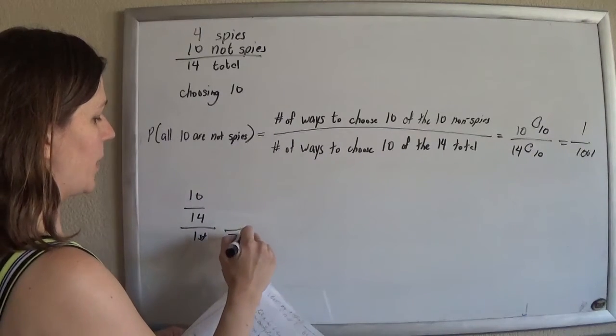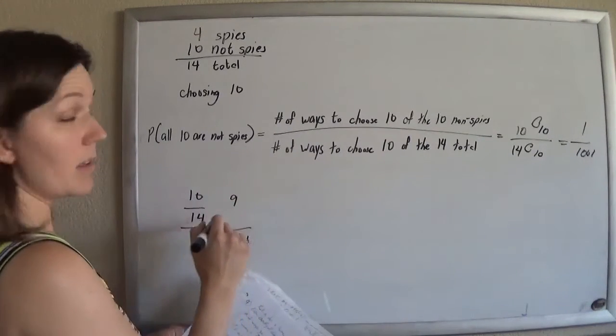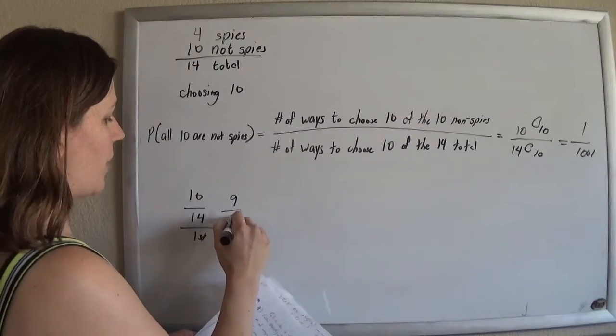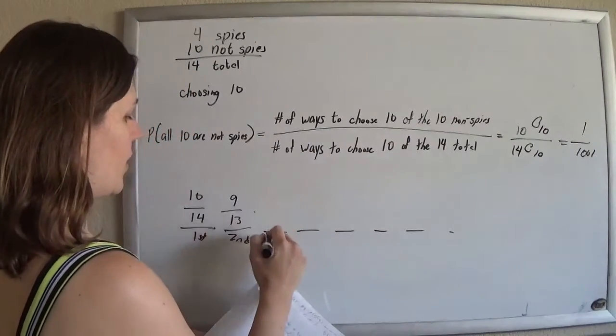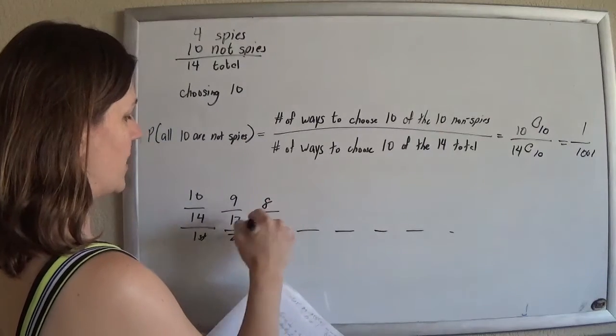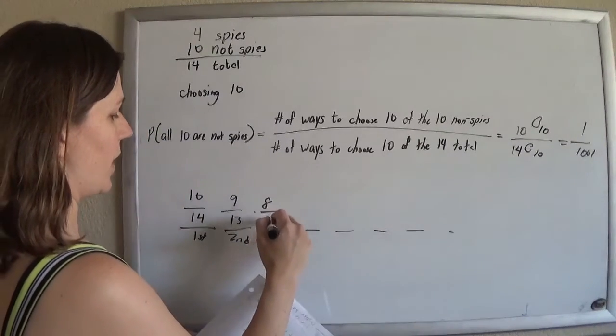And then the second guy I pick, there are 9 non-spies left out of 13 total, and then you're picking 10. So the third guy you pick, you just keep going down, 8 people left that you want out of 12.